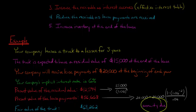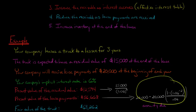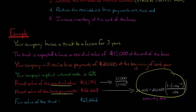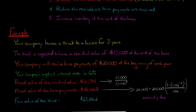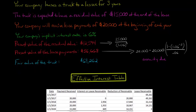Using the annuity due formula, three payments of $20,000 discounted at 6% gives us $56,668 in present value. Adding together the present value of the residual value and the present value of the lease payments — $12,594 plus $56,668 — we get $69,262 as the fair value of the truck. That is going to be our starting lease receivable.